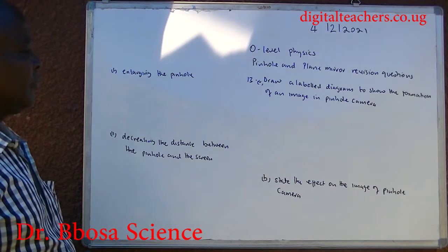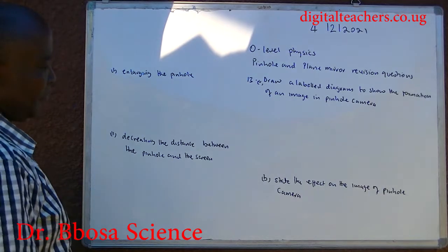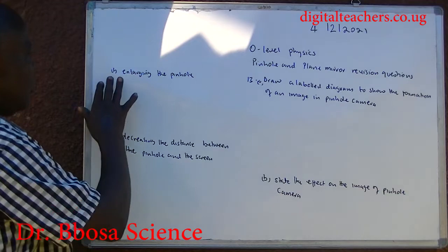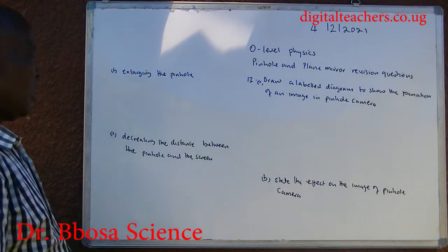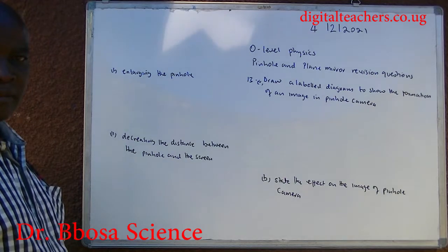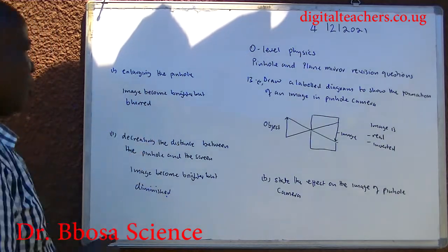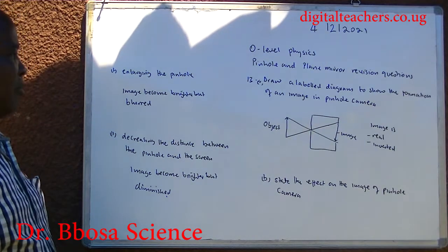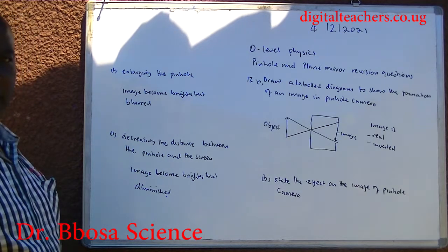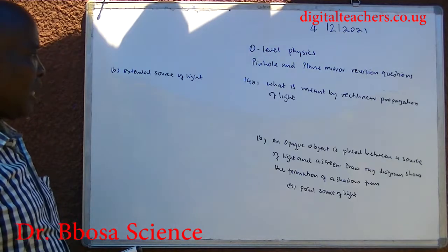Number thirteen: draw a labeled diagram to show the formation of the image in a pinhole camera. B, state the effect on the image of a pinhole camera of: one, enlarging the pinhole; two, decreasing the distance between the pinhole and the screen. The image formed by a pinhole is real and inverted. When the pinhole is enlarged, the image becomes brighter but blurred. Decreasing the distance between the pinhole and the screen makes the image become brighter but diminished.